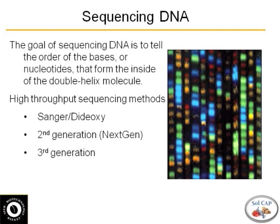I'll call it the first generation technology, which is Sanger or Dideoxy sequencing. Everything from about five years ago and before has been done for the most part using this, including a big part of the tomato genome. There's second generation, or next generation sequencing, and also what we're now calling third generation sequencing that I'm going to talk about today.